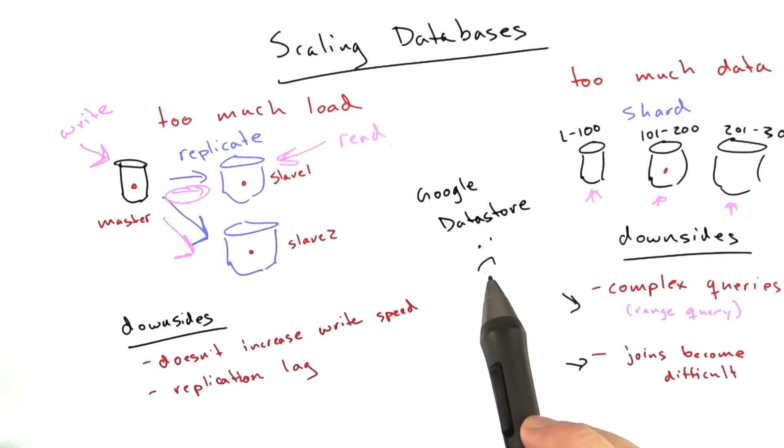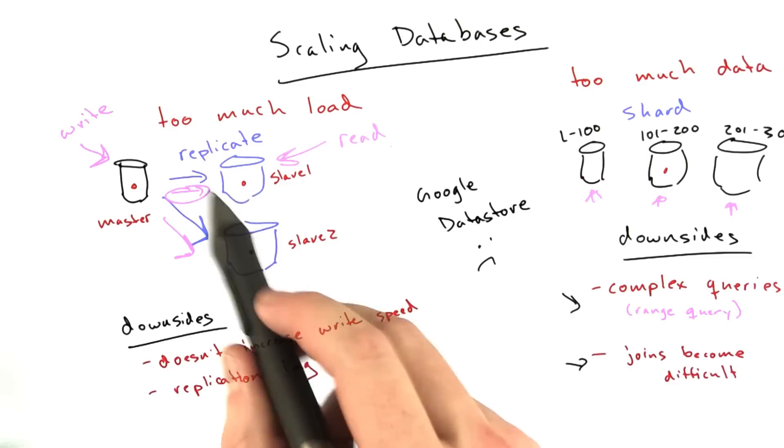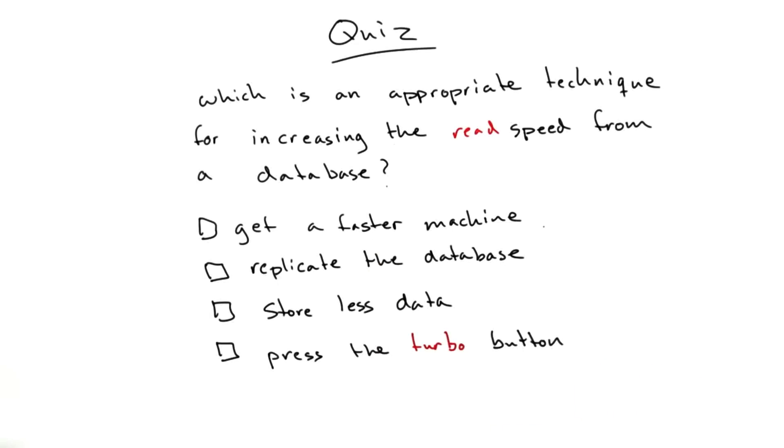But that's okay. You get this really nice benefit of having a database that is sharded and replicated to Wazoo and back. It's actually very fast and reliable. You're probably not going to have to worry about systems crashing, something that replicating a database can help with and sharding a database can help with. Okay, so just wanted to introduce those concepts. Let's have a quick quiz on it before we move along. Which is an appropriate technique for increasing the read speed from a database?